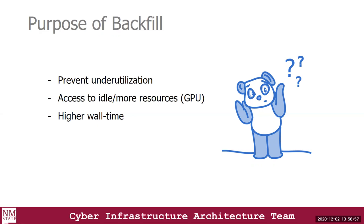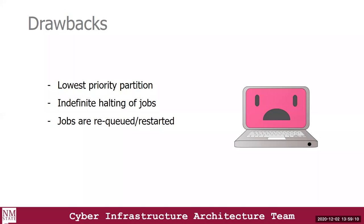The backfill partition also has its drawbacks — it is the lowest priority partition. This means the backfill partition implements what we call job preemption. Job preemption is the act of halting or stopping one or more lower priority jobs in order to allow higher priority jobs to run. Higher priority jobs are jobs submitted by users who have authorized access to a given partition, and lower priority jobs are jobs submitted by users who do not have authorized access to a given partition.